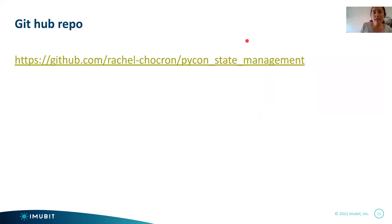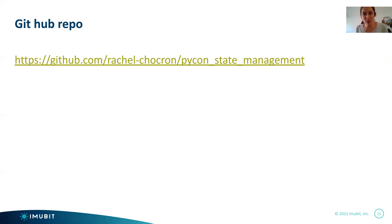Here is the link to a GitHub repo with these presentation slides if you would like to see it again. To summarize: we saw the problem — state management in Jupyter applications — and we saw our in-house state solution we created to solve this problem, including the concept and a code example.